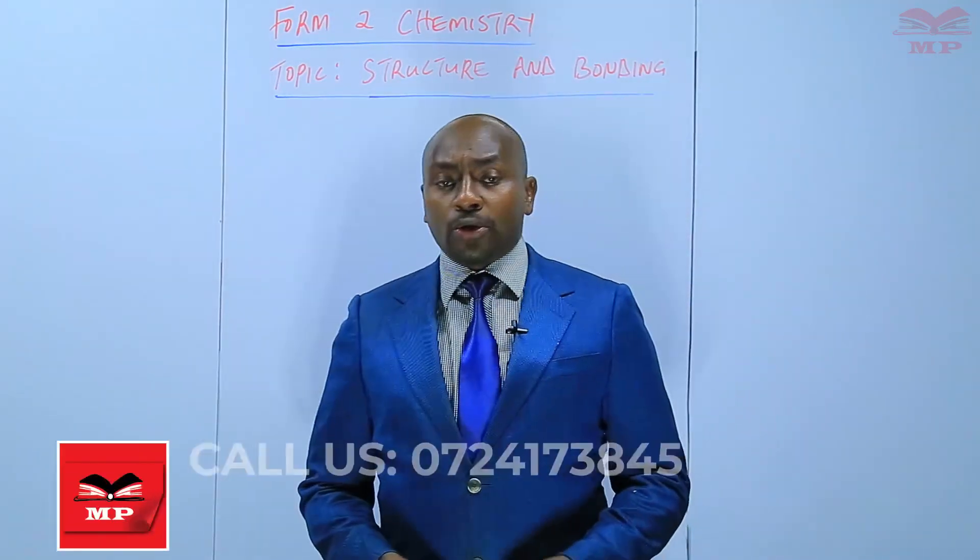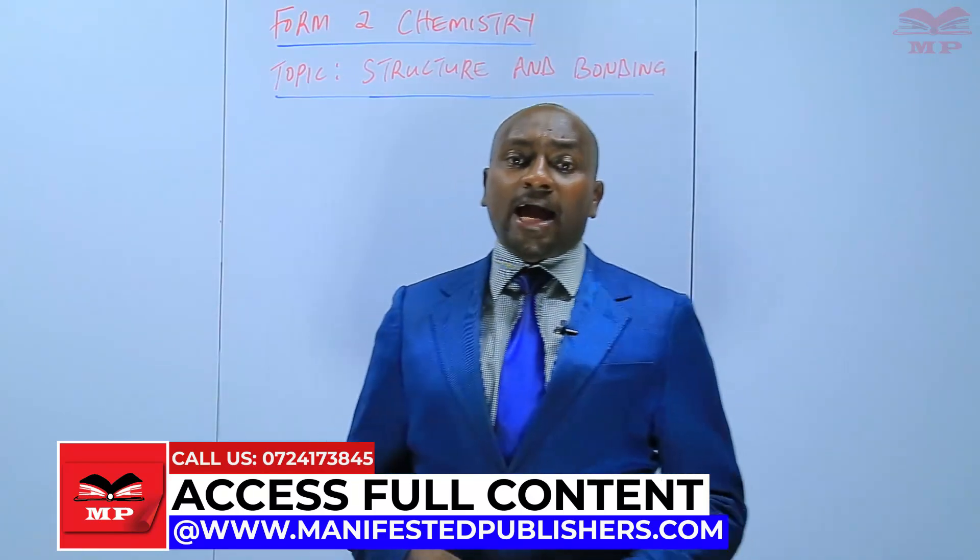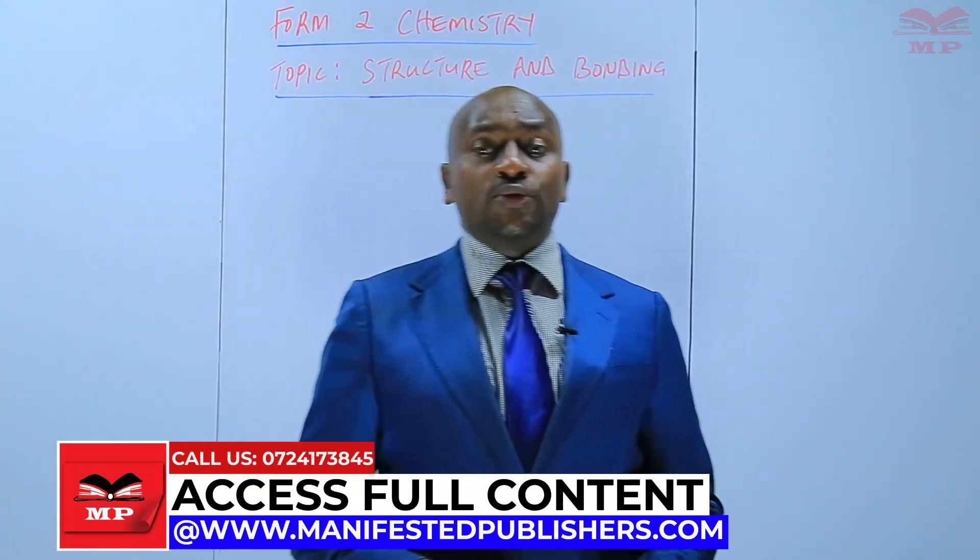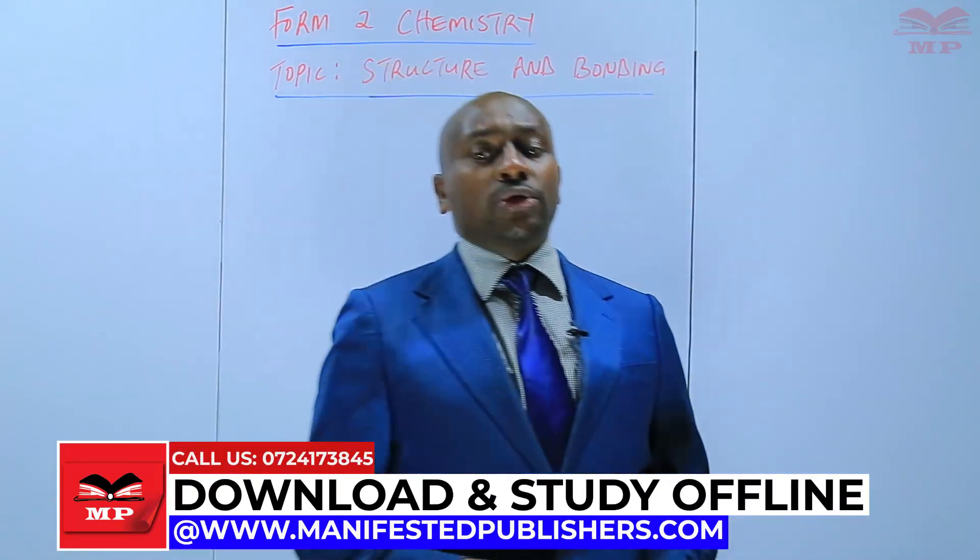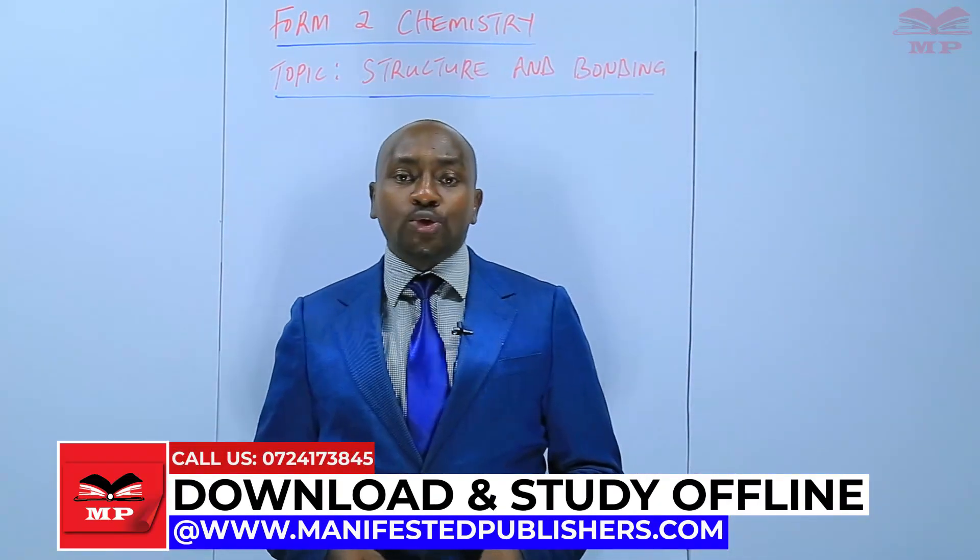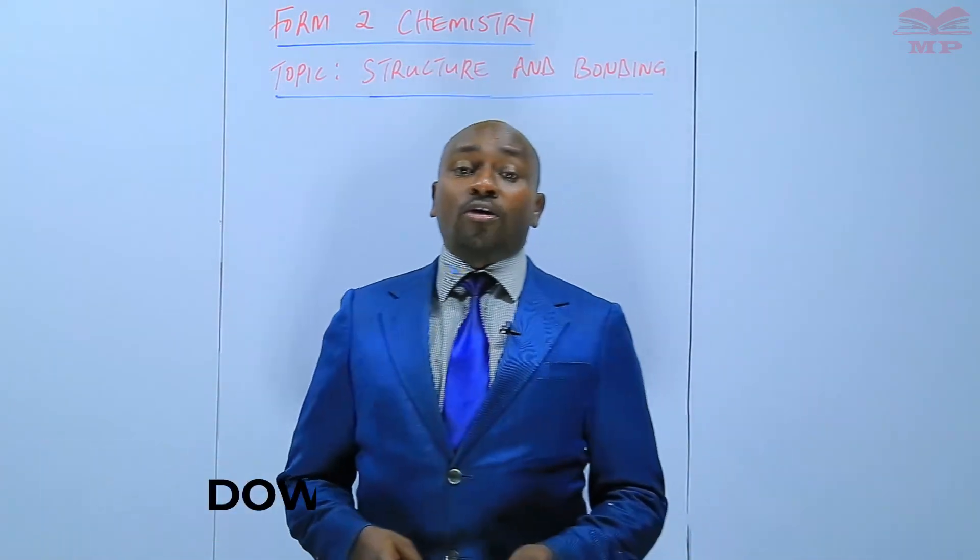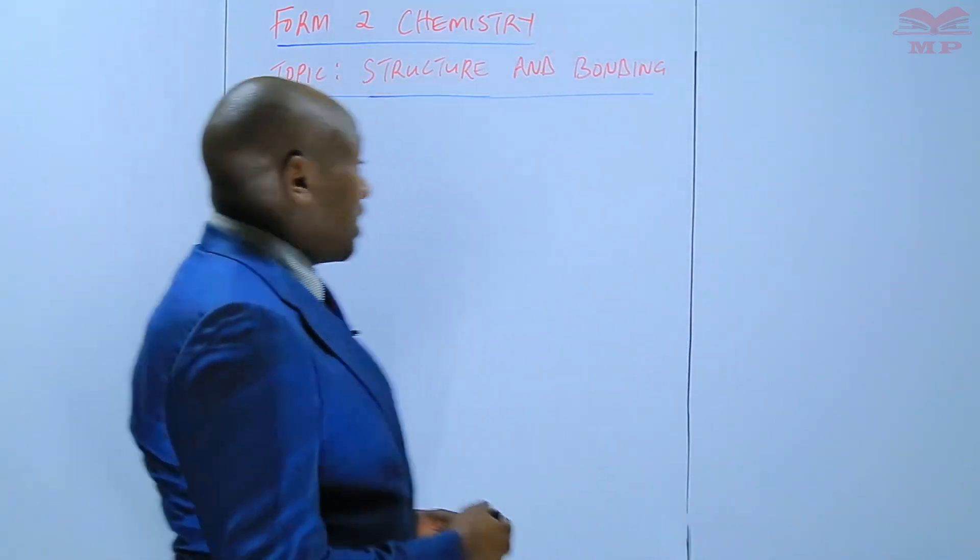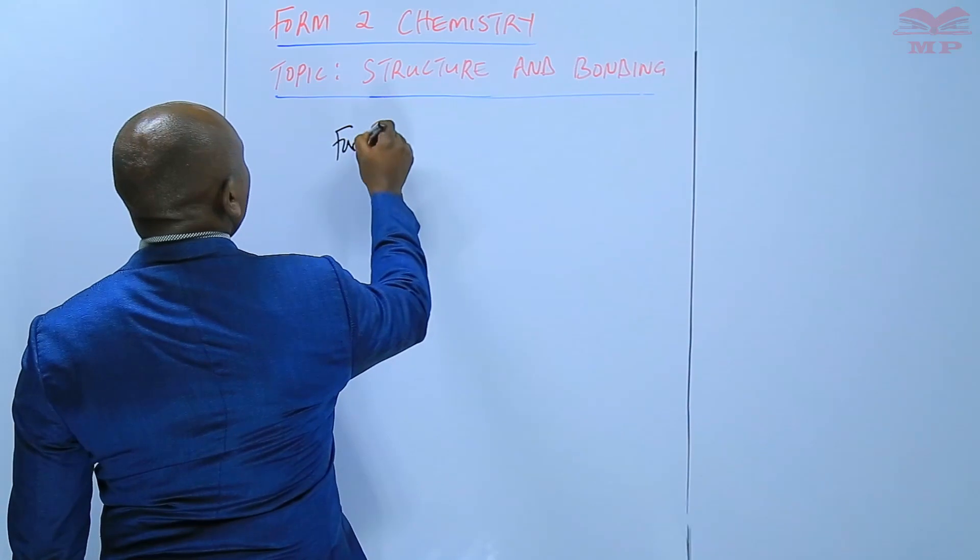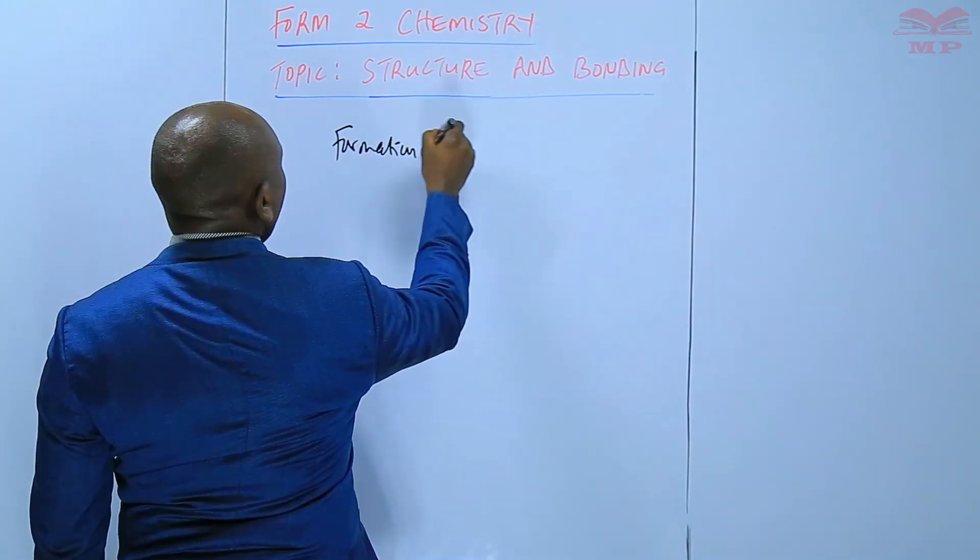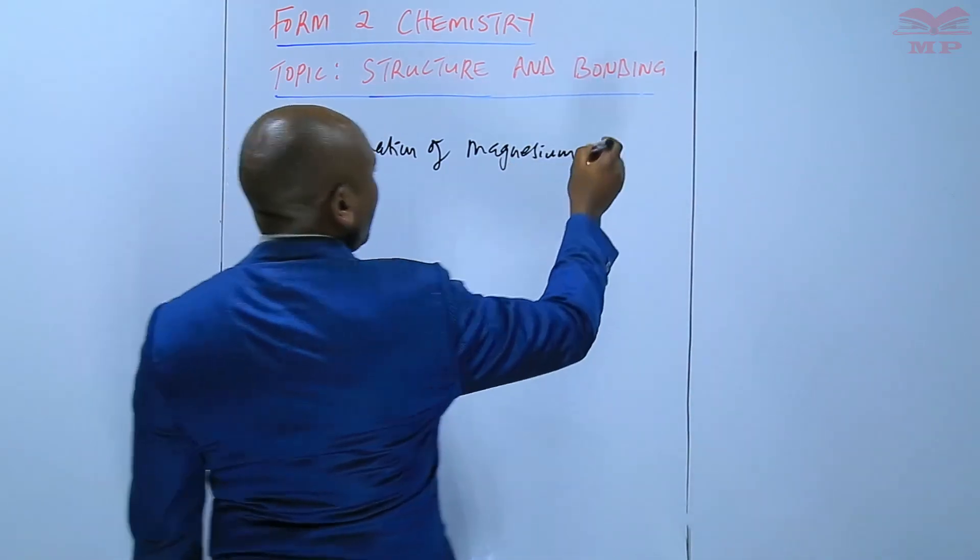We are going to see the various ways of illustrating ionic bonds. During our last lesson, we saw an example of how to illustrate by use of a dot and cross diagram the structure of sodium chloride. Today, we are going to illustrate formation of magnesium fluoride.